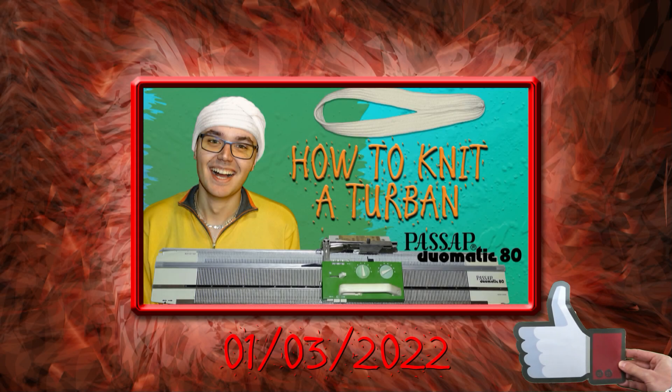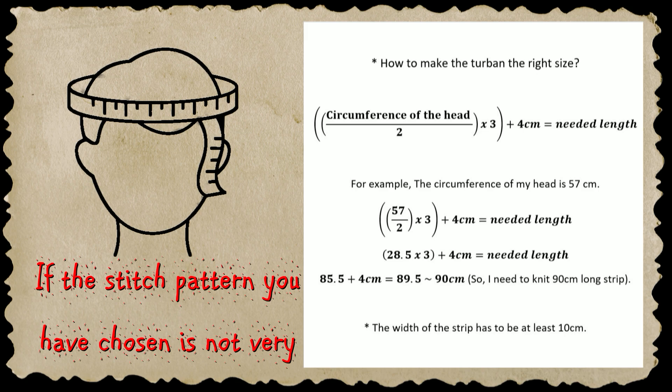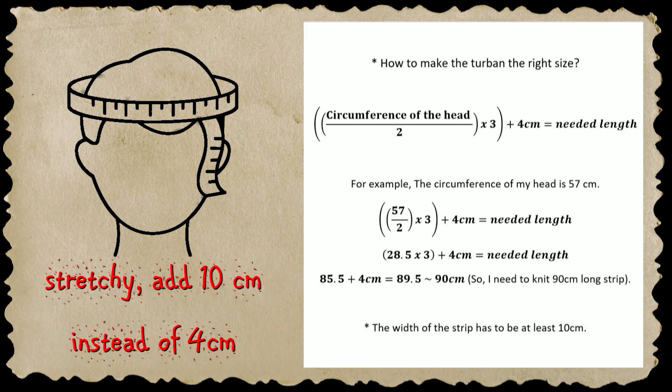Do you remember the turban I made some time ago? Today I will show you how to make a different version. To find the right length, measure your head circumference and divide it by 2. Then multiply the result by 3 and add 4 centimeters extra.